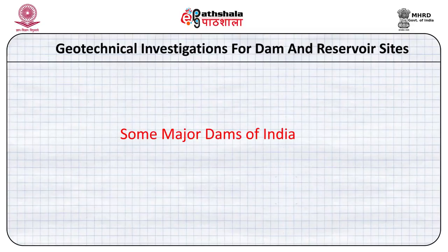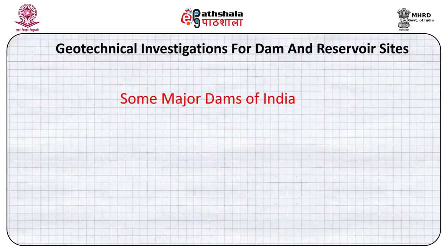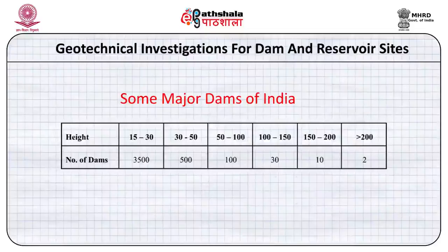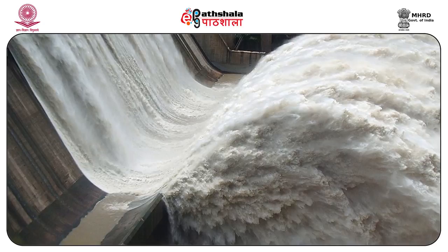India has more than 4,000 dams. Of these, about 3,500 have a height less than 30 meters; around 500 are 30 to 50 meters; 100 dams are 50 to 100 meters; 30 dams are 100 to 150 meters; 10 dams are 150 to 200 meters; and 2 dams exceed 200 meters. These two are the Bhakra-Nangal Dam in Himachal Pradesh, built on Shivalik sandstones, which is a concrete dam.